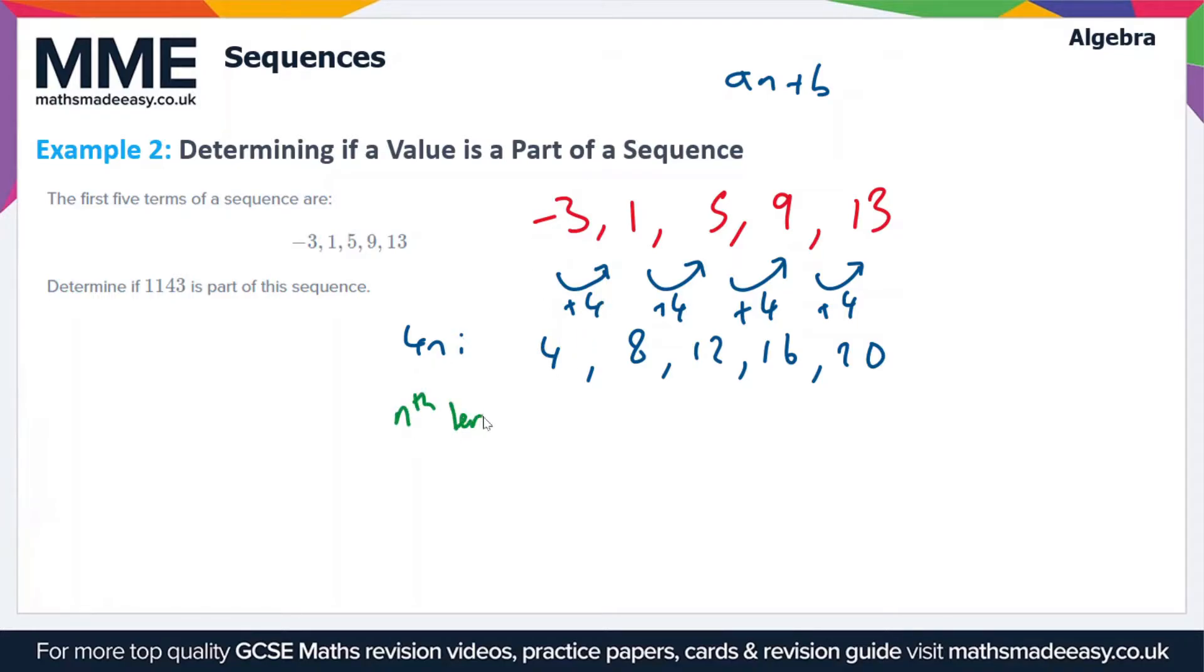So we need to subtract 7 from each of these values to get the sequence we've got. So the nth term is 4n minus 7.